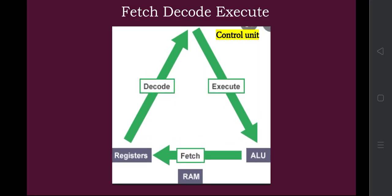This diagram shows how the fetch-decode-execute cycle works. The control unit is at the top, registers are the storage cells that carry data, RAM is the random access memory that interacts with the CPU, and ALU is the arithmetic logical unit. From the registers, the input instructions or data are fetched, stored into the registers, then decoded. After decoding, the control signal passes what action has to be taken by the CPU, and accordingly the instructions are executed.